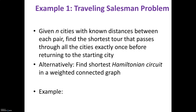The problem statement of the Traveling Salesman Problem is: given n cities with known distances between each pair, find the shortest tour that passes through all cities exactly once before returning to the starting city. A person starts the tour from a city, say A, visits all remaining cities exactly once, and comes back to the starting city, in such a way that the total tour length is minimized.